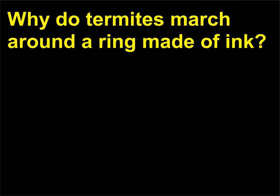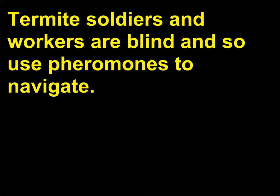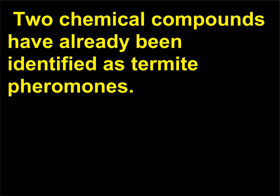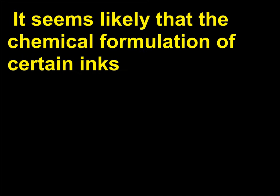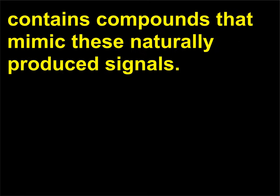Why do termites march around a ring made of ink? Termite soldiers and workers are blind and so use pheromones to navigate. Two chemical compounds have already been identified as termite pheromones. It seems likely that the chemical formulation of certain inks contains compounds that mimic these naturally produced signals.